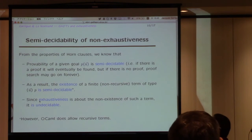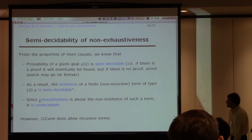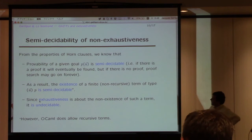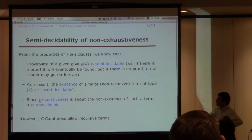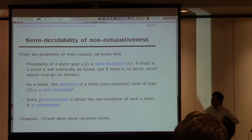And what happens? What do we know about this? Because, well, from Horn clauses, of course, I was taught. We know that provability of a given goal P U is semi-decidable. So if there is a proof, it will be, there is a procedure that will eventually prove it. But if there is no proof, proof search may go on forever.